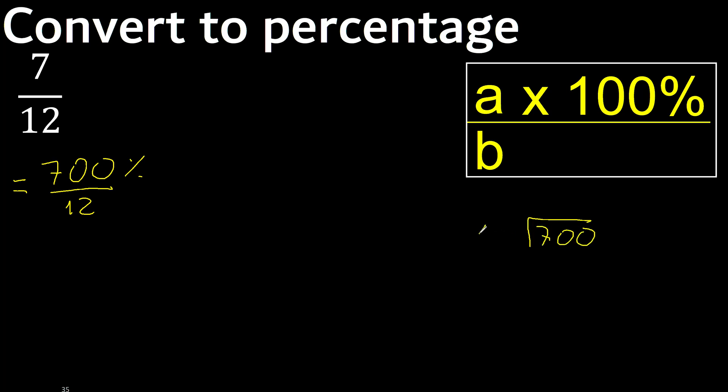700 divided by 12. 7 is less, therefore next: 0. 70. 70 is not less, therefore with 70, 12 multiplied by which number is nearest to 70 but not greater?